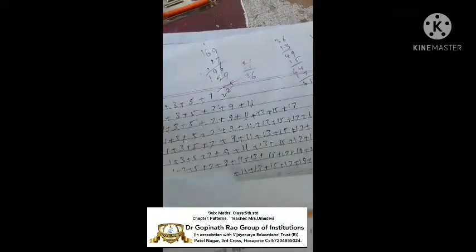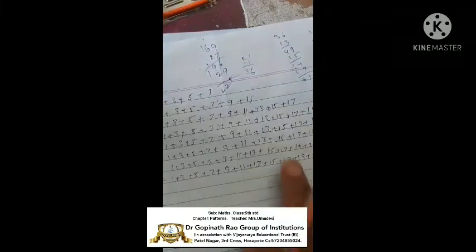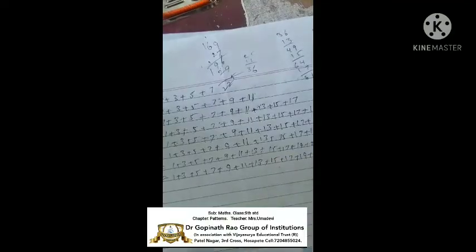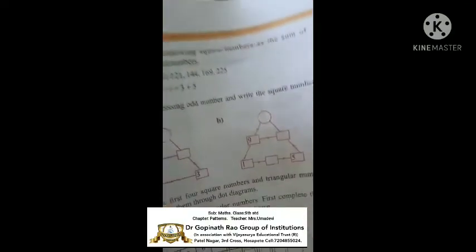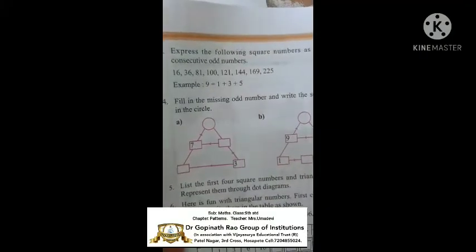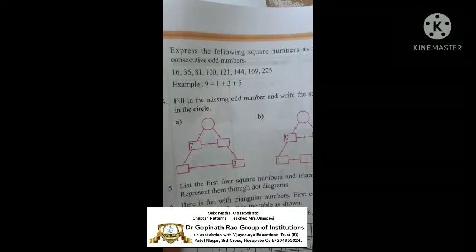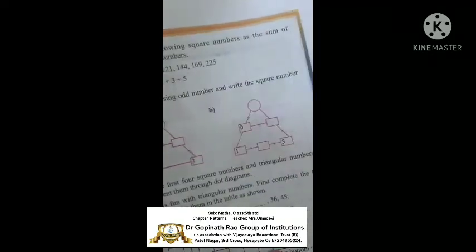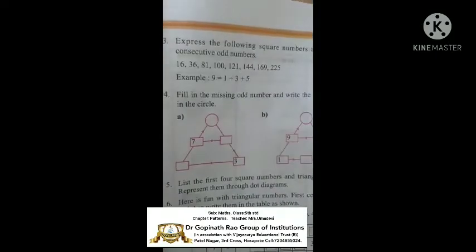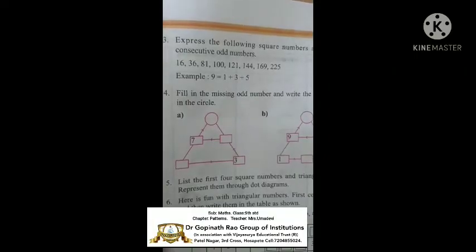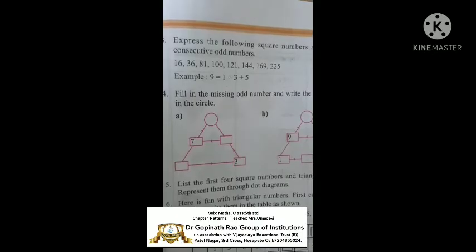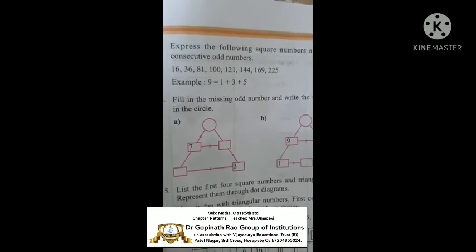Next one — very easy now. Here you are using only odd numbers. Fourth question: fill in the missing odd numbers and write the square numbers in the circle.